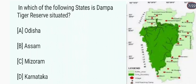In which of the following states is Dumpa Tiger Reserve situated? Dumpa Tiger Reserve is the largest wildlife sanctuary of Mizoram. Isko 1985 mein notified kiya gaya tha, aur Tiger Reserve ka darja isko 1994 mein mila. It is situated in the western part of Mizoram state, aur iska international border Bangladesh se lagta hai.